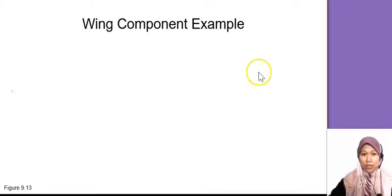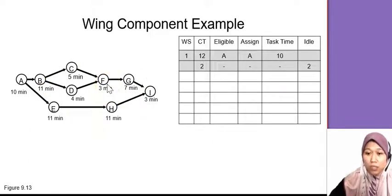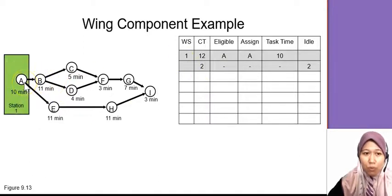We have this precedent diagram. Now we are going to do the workstation or assign it. First, workstation 1 always starts with 1. 12 is the cycle time. Always start with 12 if you open a new workstation. Eligible, we start with A. We don't have any choice. So we choose A, assign A, task time 10. So you minus 12 with 10, you got 2. Next, you have 2 and then either you go to B or E but you have balance 2 only. So you cannot do anything. You just close workstation 1 with only task A.